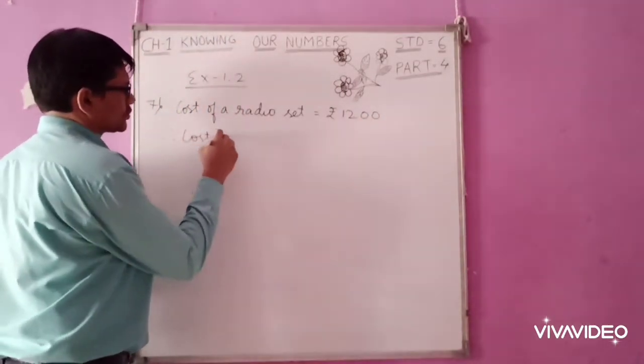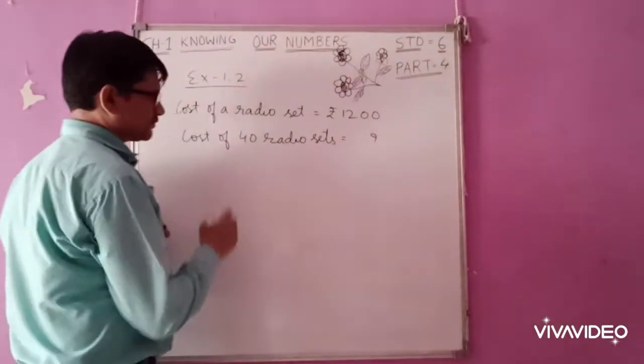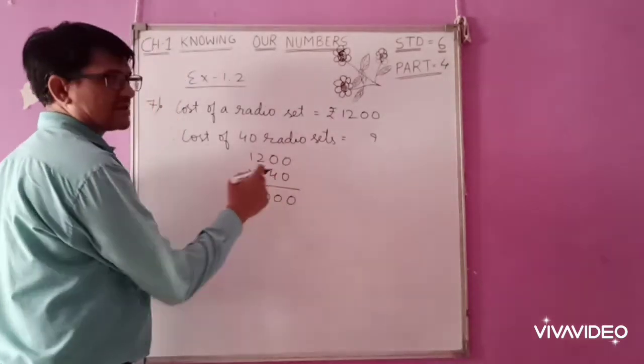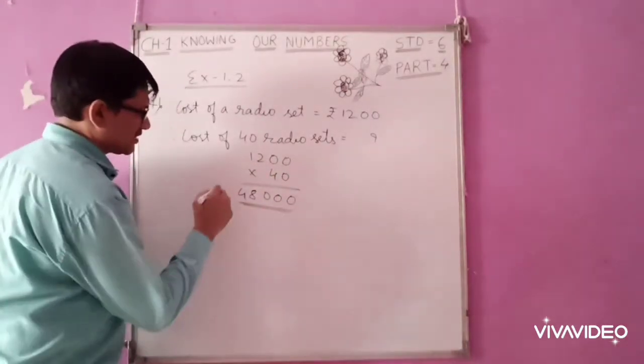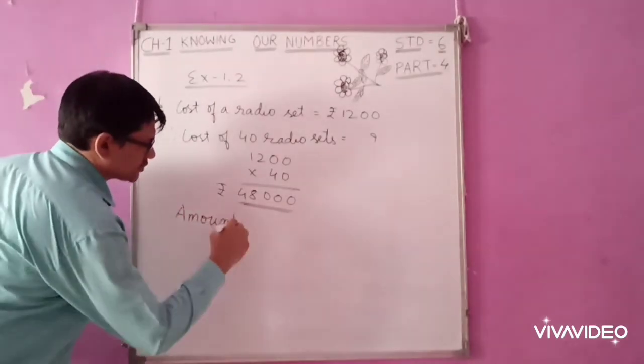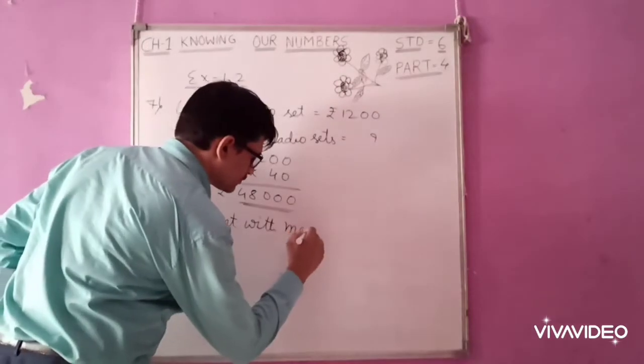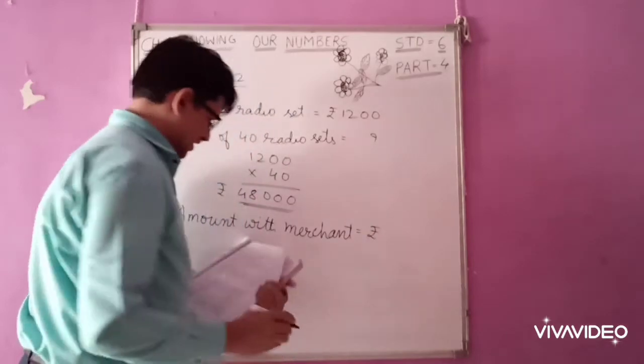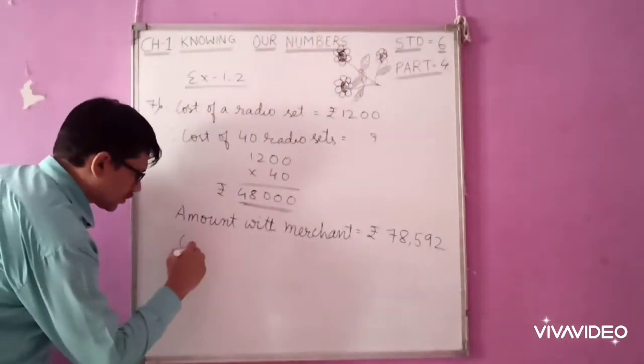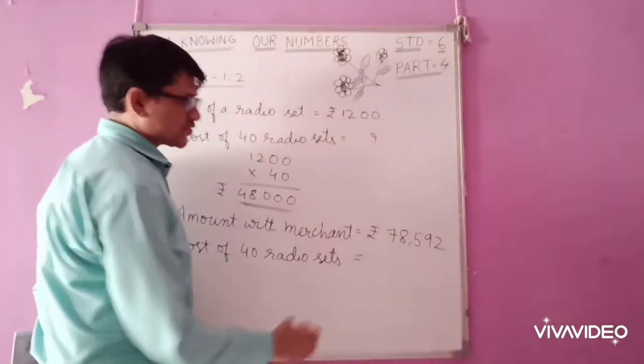Therefore, cost of 40 radio sets is equal to Rs. 1200 multiplied by 40. So that will be Rs. 48,000. Now, amount with merchant, that is Rs. 78,592. Now, cost of 40 radio sets, that is Rs. 48,000.